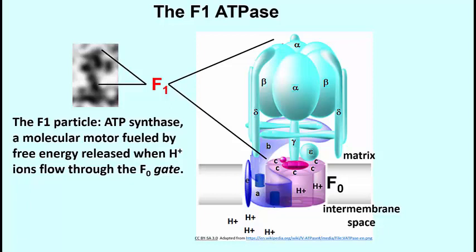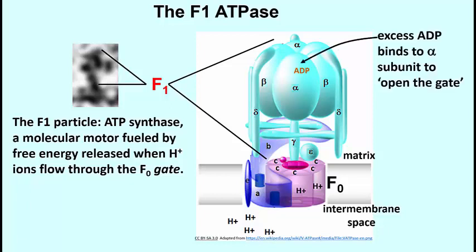When there's a lot of ADP around, which would indicate that the cell is rapidly using up ATP, so this is a busy cell, the excess ADP binds to the alpha subunit and opens up the proton gate. So the alpha subunit is a regulatory protein whose shape changes when it binds this excess ADP, opening a pathway for the protons to flow back into the matrix from where they have accumulated during electron transport.